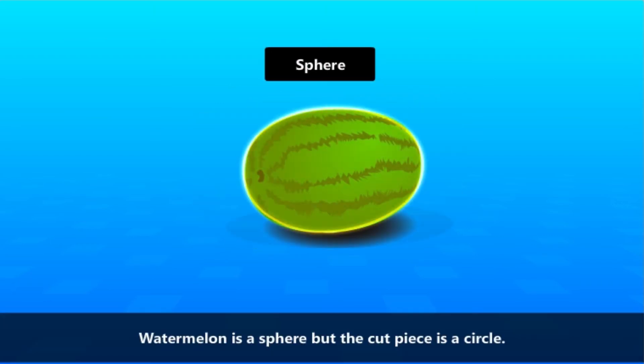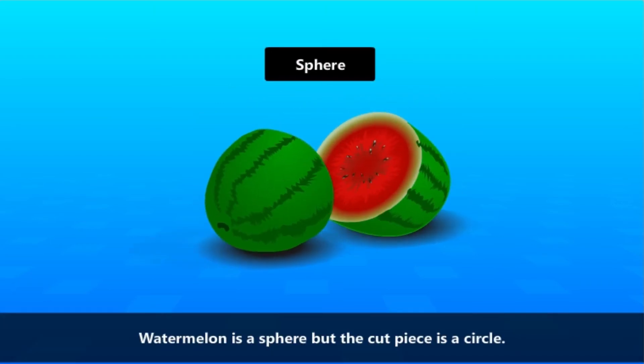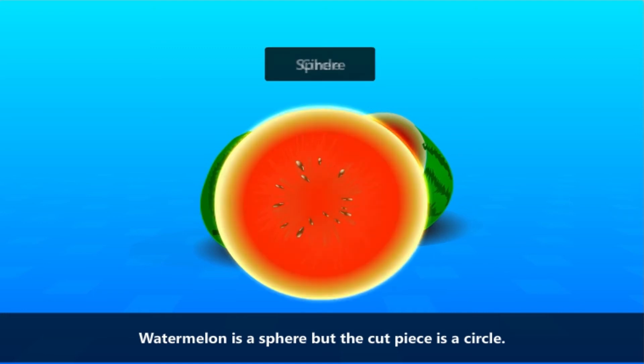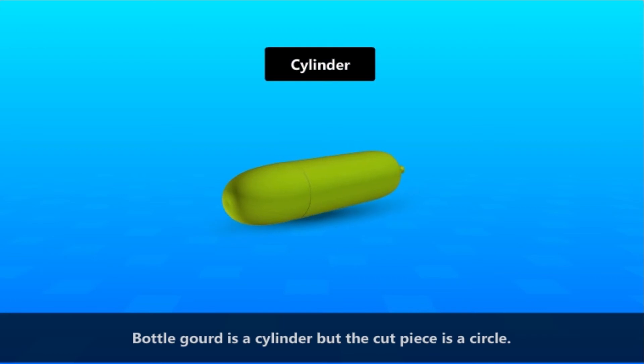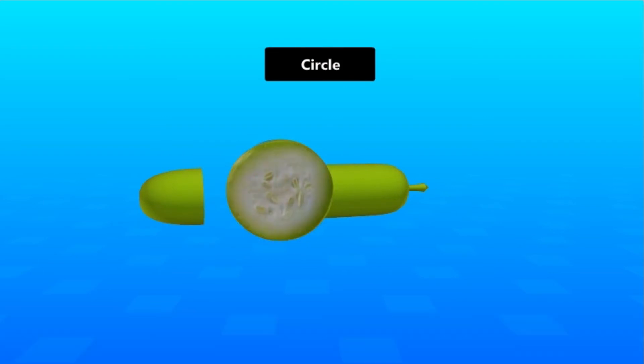A watermelon is spherical, but the cut piece is a circle. The bottle gourd is a cylinder, but the cut piece is also a circle. Let us now see if we get the same results when the way we cut the objects changes.